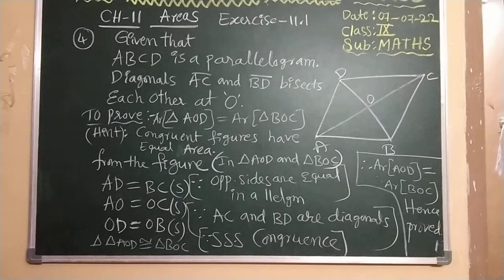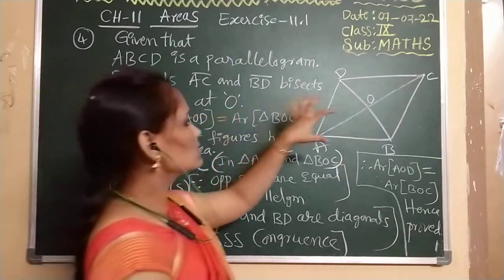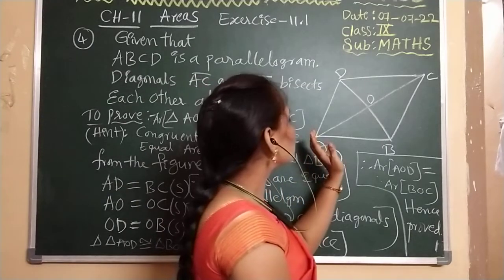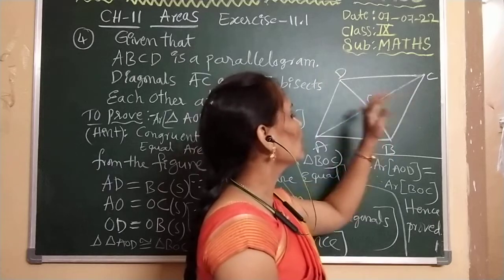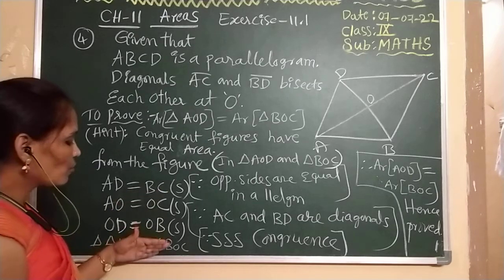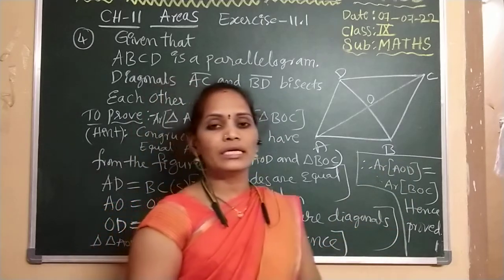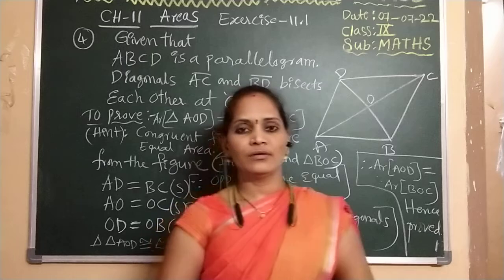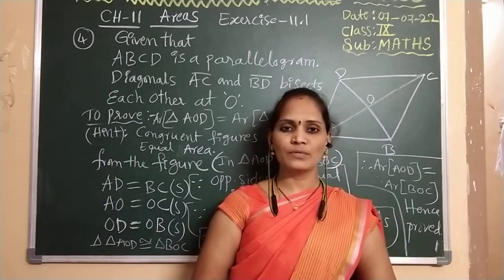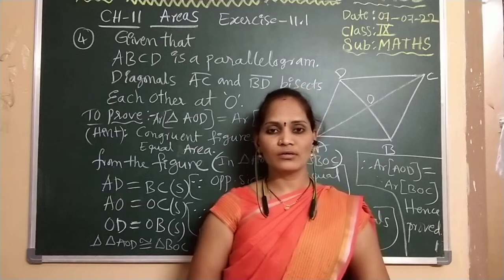I hope you understood. Very simple — everything is there in the question itself. Just based on this key point, we can prove that AOD and BOC are congruent triangles. Both triangles are congruent, so we can say that these two triangles have equal area. For more videos, subscribe to my channel, support me, and like the videos. If you have any doubts, you can write in the comment box.